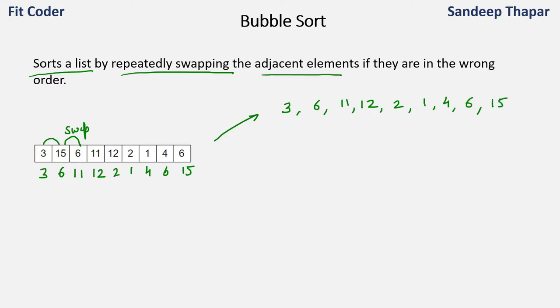So the largest value in the array has reached its right position. 15 is the largest, so 15 has reached the end. This was after the first round.